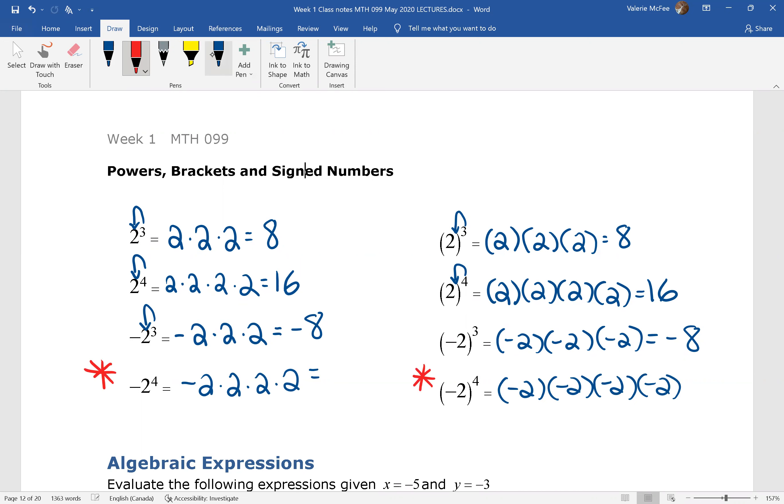You can see in the first example we have one negative sign, an odd number, so the product is negative. In the second example, we have four negative signs, an even number, and the product is positive.